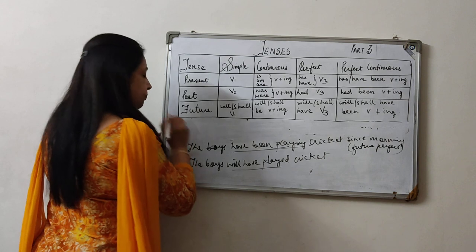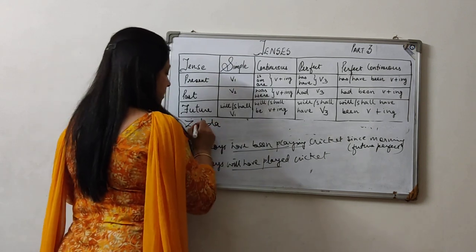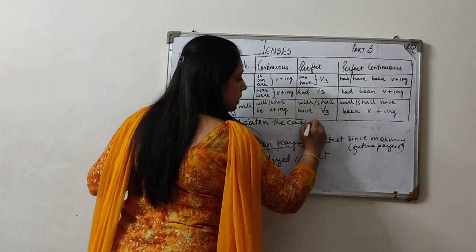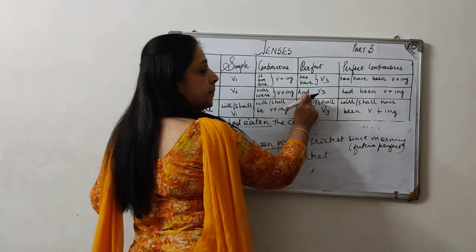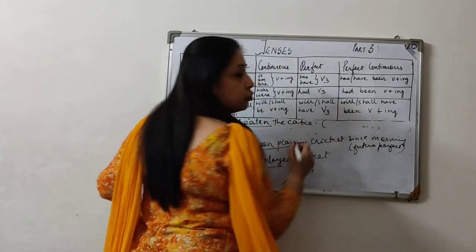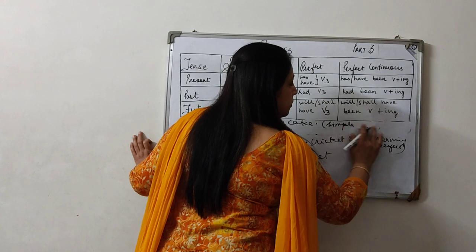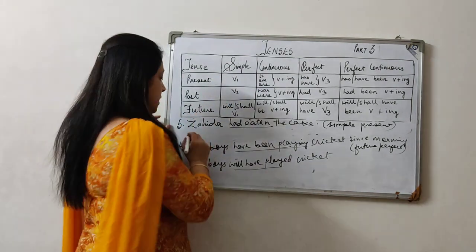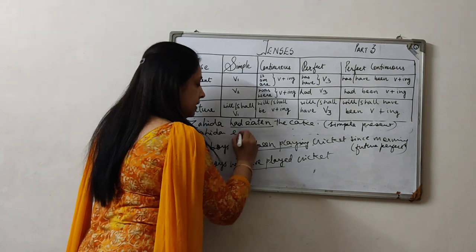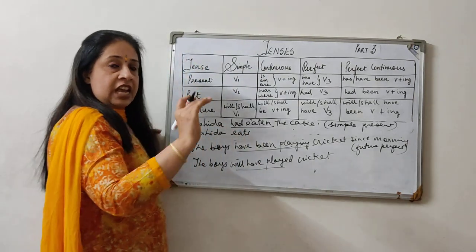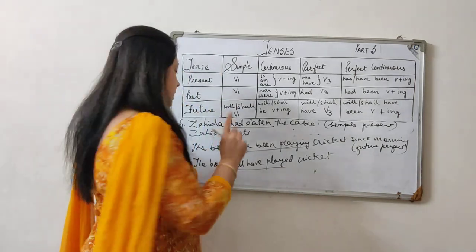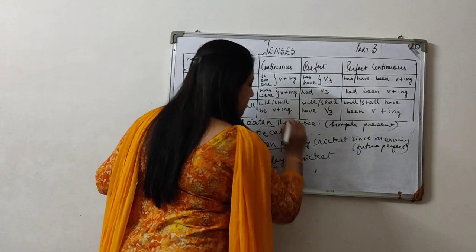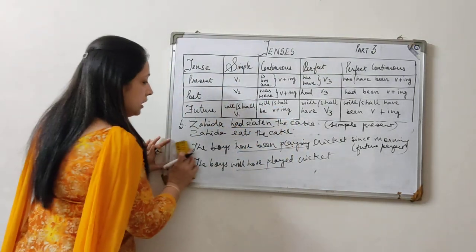Suppose the sentence is: 'Zahida had eaten the cake.' 'Had eaten' is which tense? It is past perfect. Now we have to change it into simple present. Simple present is here — we have to make it verb first form. 'Eat, ate, eaten' are the three forms. First form is 'eat'. Zahida is a single person, so we have to add an S. 'Zahida eats the cake.' This becomes simple present.